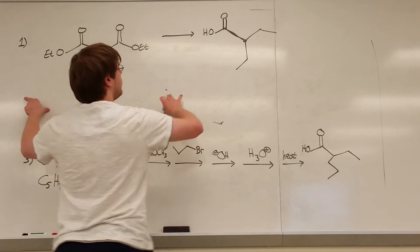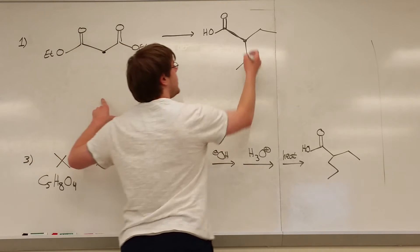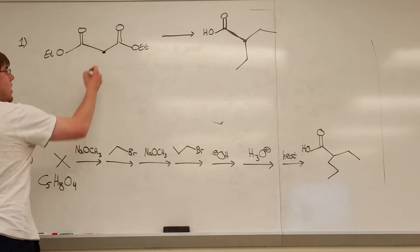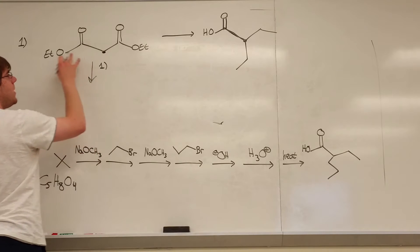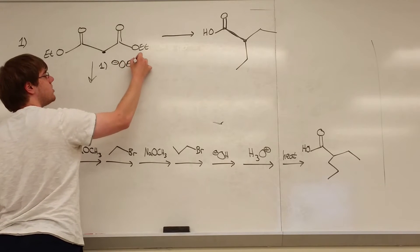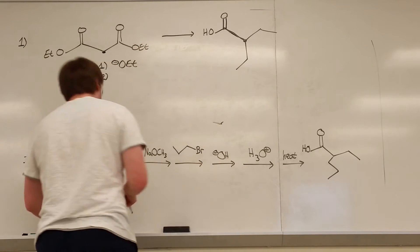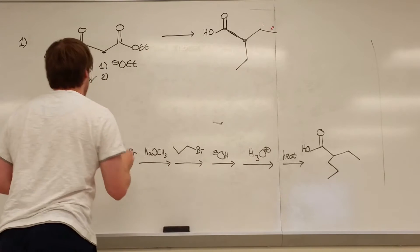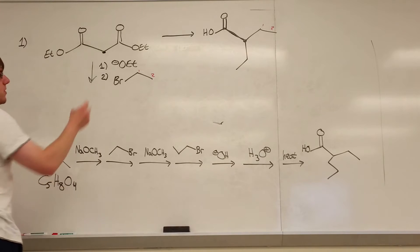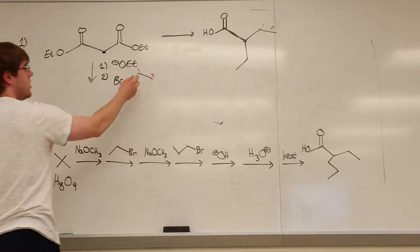I'm going to go forwards for this one. I see that I need to add one carbon chain that is two carbons long, and a second one that is also two carbons long. Step one: my base should match the OR group of my ester, so OET minus — or you could write NaOEt, they're the same thing for our purposes. Step two: I need the carbon chain I want to add, so a halogen attached to two carbons. The negatively charged carbon attacks carbon one and kicks the bromine off, so now carbons one and two are attached.